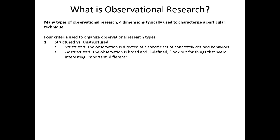First, observational research comes in structured and unstructured formats. When it's structured, the observation we intend to look at is clearly defined. For example, perhaps we're interested in the number of products a consumer touches while shopping in a retail store — counting the exact number of products they touched within a particular timeframe gives us a well-structured set of measurement rules. On the other hand, a lot of observational research is unstructured — we don't set any particular rules of what we're looking for. Instead, we're looking out for consumer behaviors that seem interesting, important, or different than our expectations. This tends to be associated with exploratory research designs.